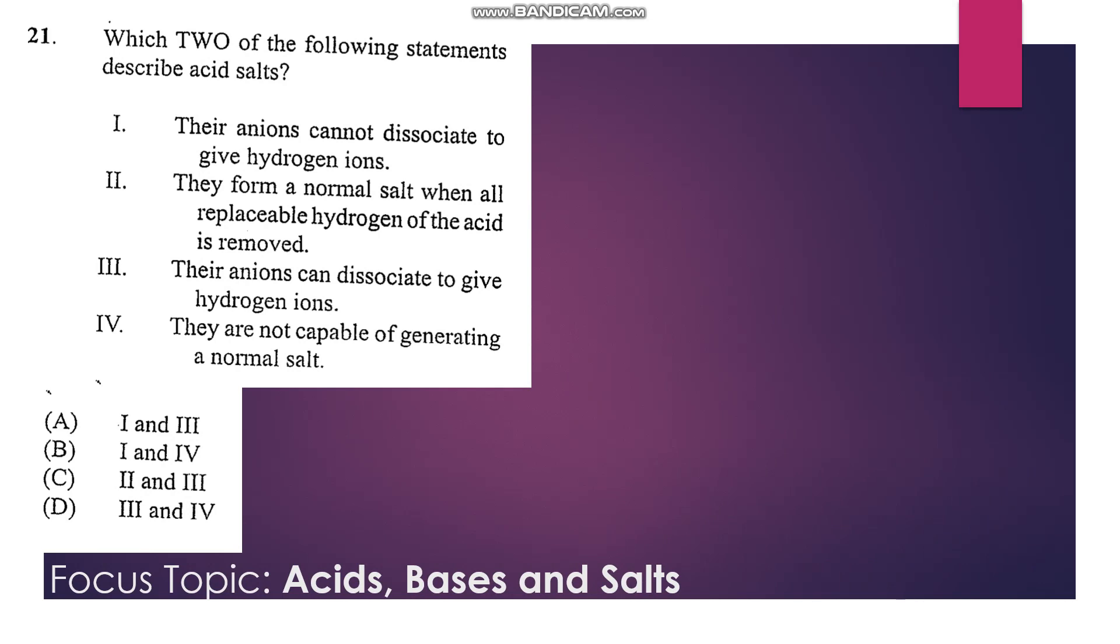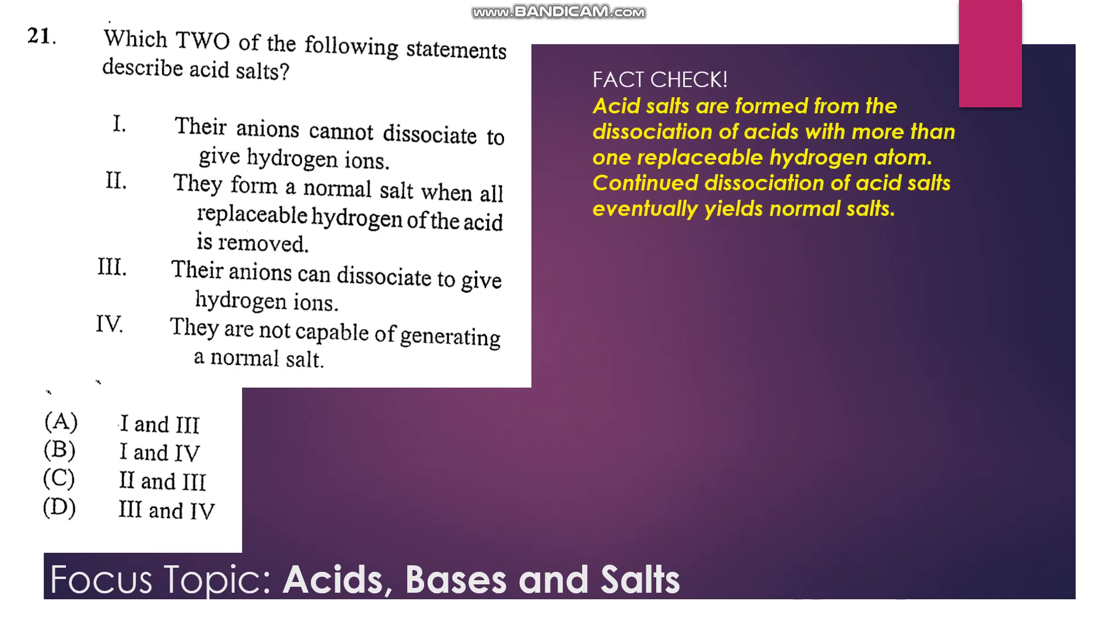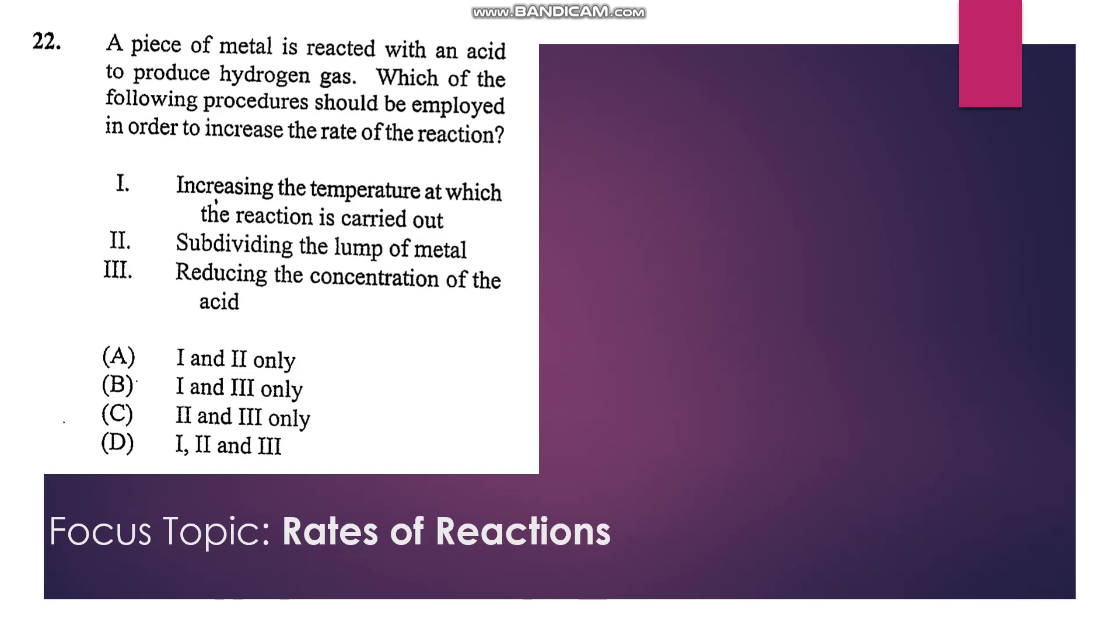Number 21: Which two of the following statements describe acid salts? And we know that acid salts are formed from the dissociation of acids which have more than one replaceable hydrogen atom. So our answer would be C: 2 and 3.